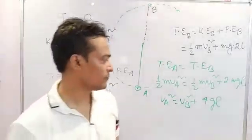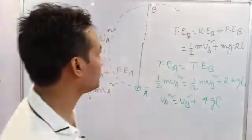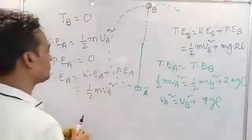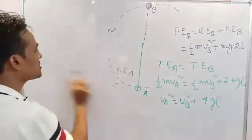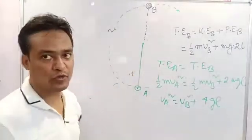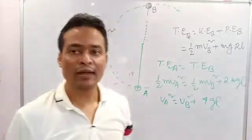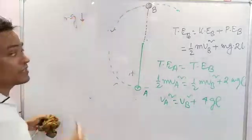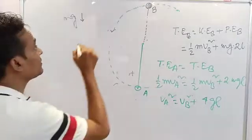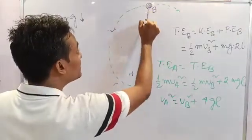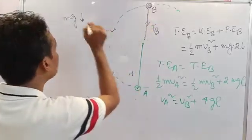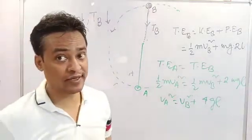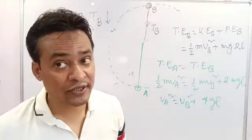Now I am going to say a very important line. Consider this point — we are considering the topmost point. How many forces are acting on the body at the topmost point? The weight of the body is acting in the downward direction, mg is acting in the downward direction. And the body feels the tension towards the center. Tension always acts towards the center.